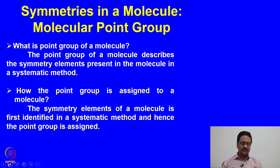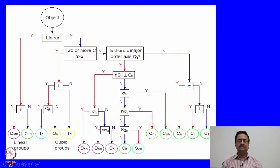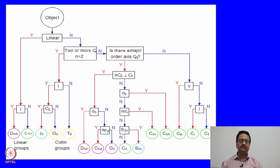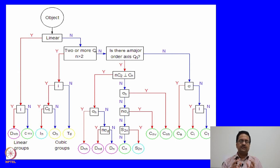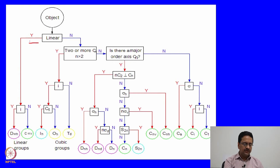We can understand this using a very elaborated flow chart shown here. What you can see is a flow chart where all possible symmetry elements and the classes of point groups are identified. When we get an object, we should start asking questions about the symmetries present. The first question one asks is whether the molecule is a linear molecule or a non-linear molecule. If the molecule is linear, we move towards the left; if non-linear, we move along the right.